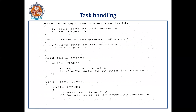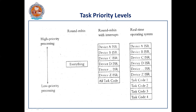In the case of real-time operating systems, the ISRs are given higher priority, and all the task code is given next. But in the case of RTOS, you can also specify priorities to your task codes. This is how you can give task priority levels — the upper level is high priority and the lower is low priority. In round-robin, all are equal priority. In round-robin with interrupts, all ISRs come first and then all task code. But in the case of real-time operating system, the task code can also be given priorities.